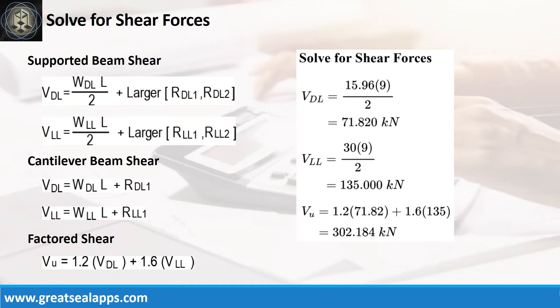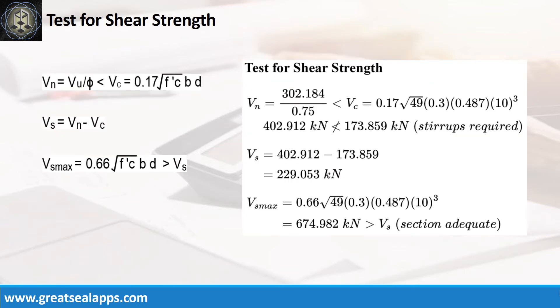The shear force from dead load is 71.82 kN, and live load is 135 kN, for a factored shear force of 302.184 kN. The nominal shear force is 402.912 kN, greater than 173.859 kN concrete capacity.